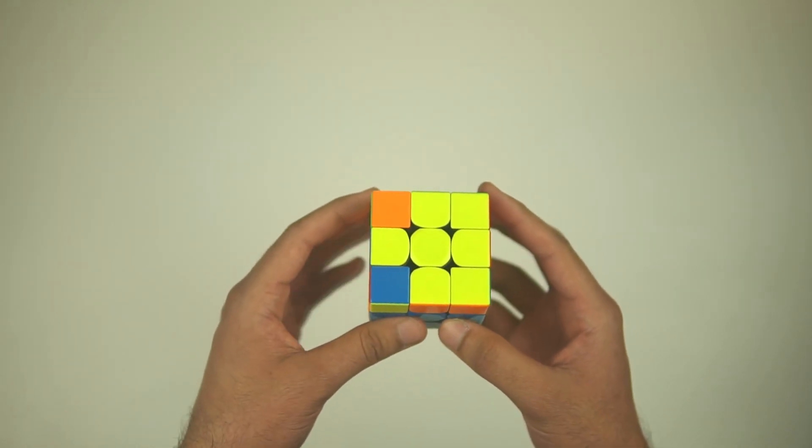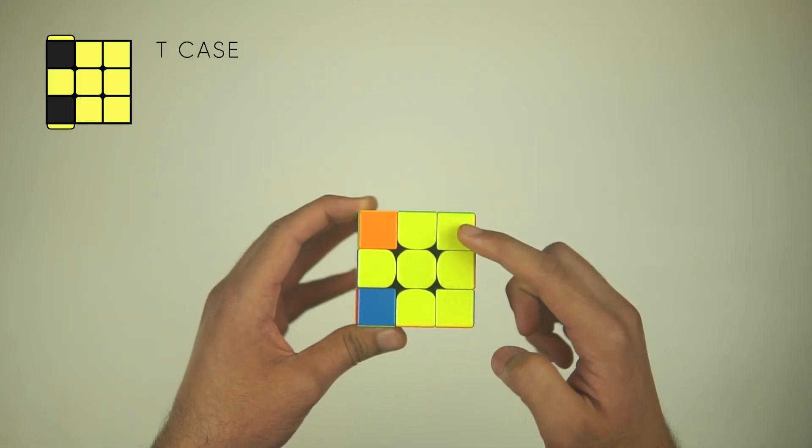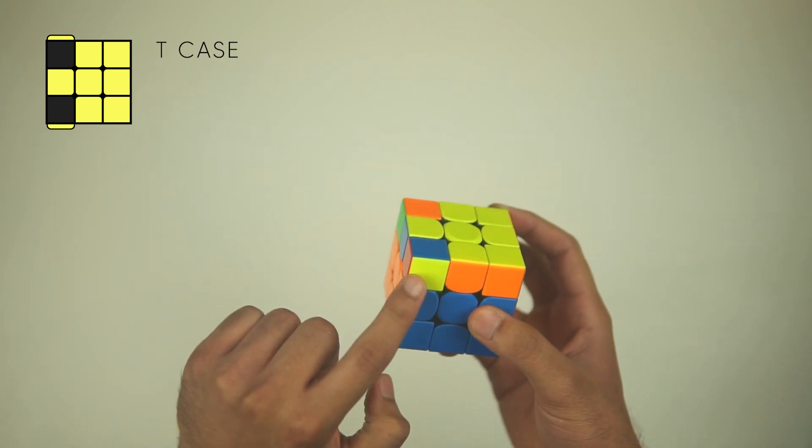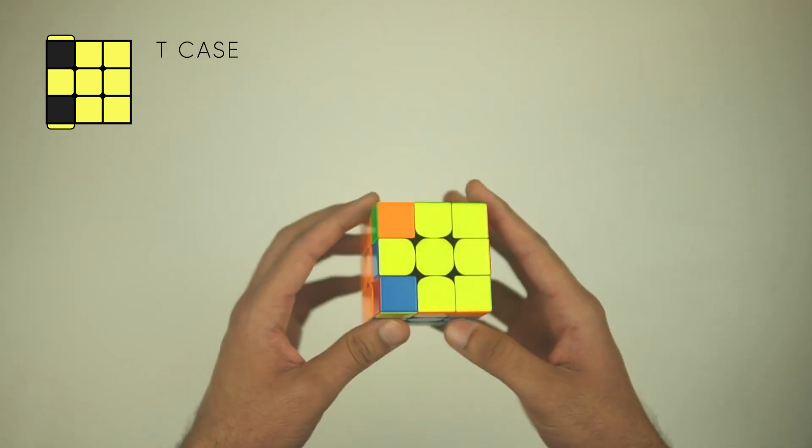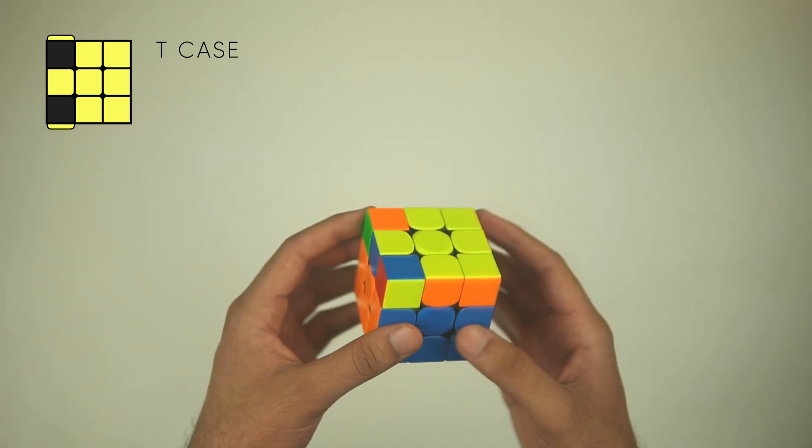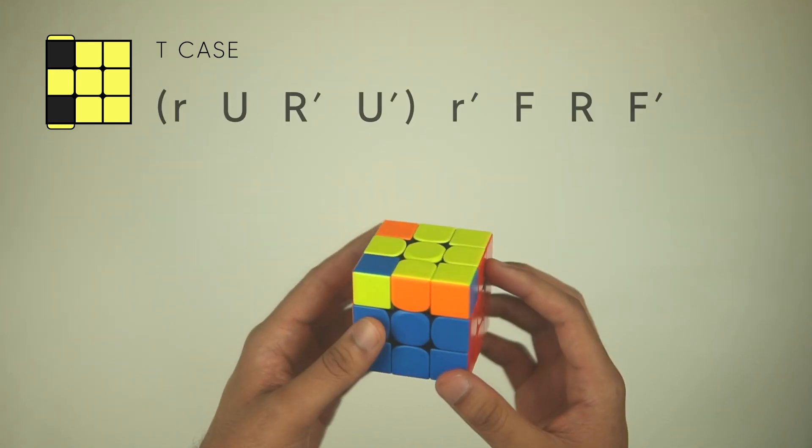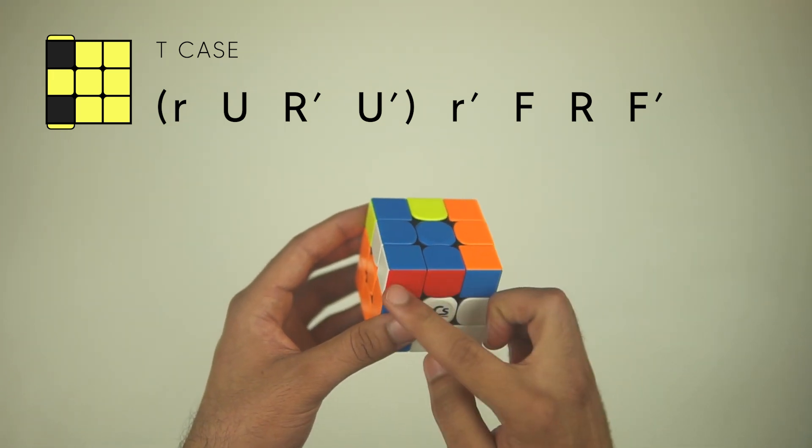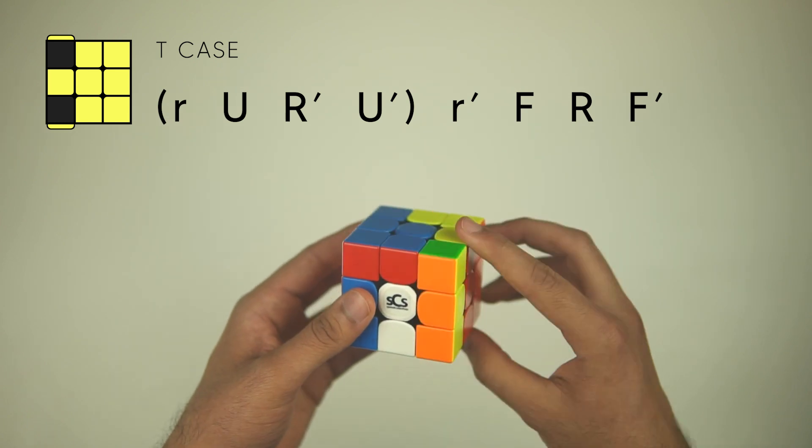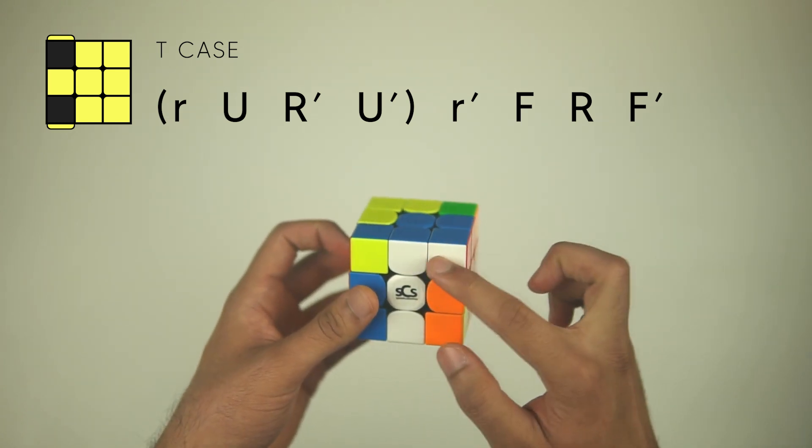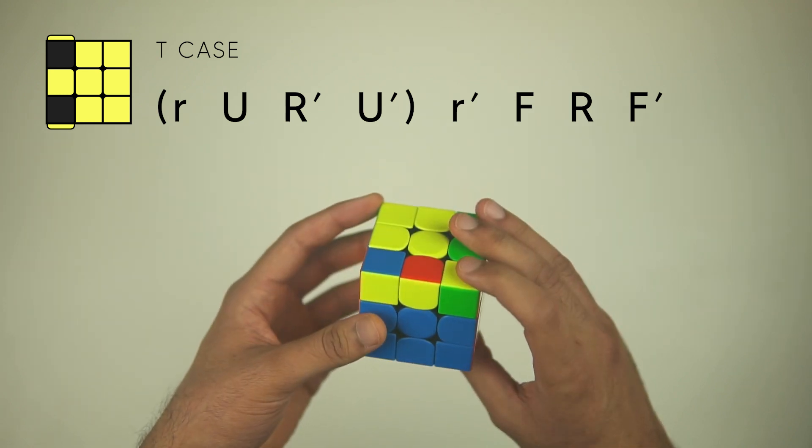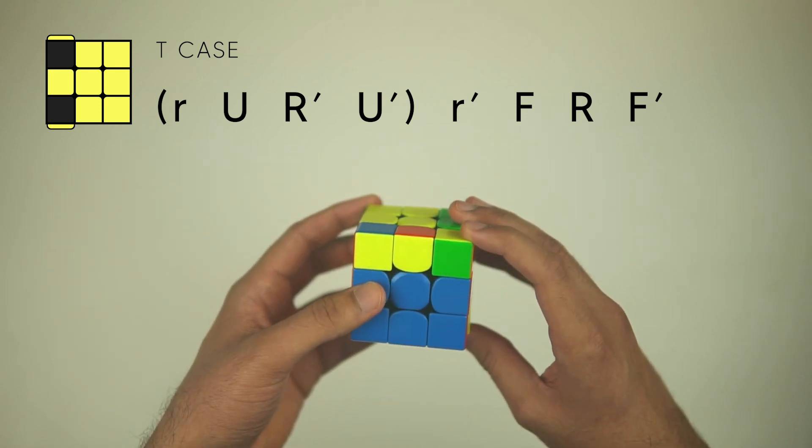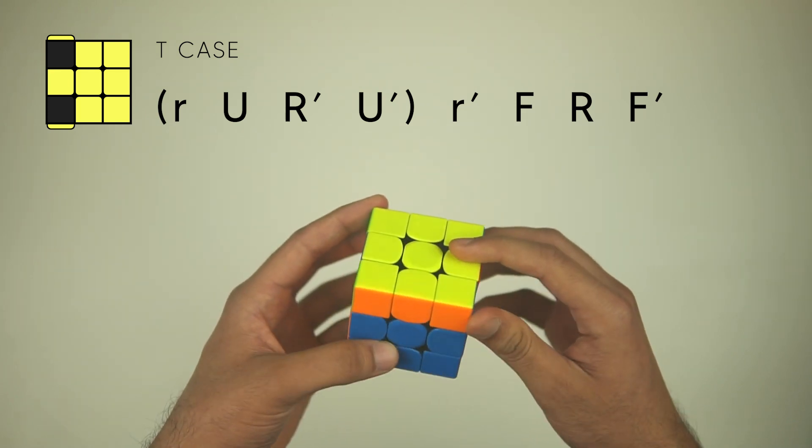Next up, we have what is called the T case, where you have these two yellow corners solved on the same side. And on the left, you're going to see this yellow corner here and a yellow corner here on opposite ends. And just hold it like this. And this is actually the inverse of the L case. We're going to do a lowercase R first, do a U to move this out of the way, R', U', and we're going to insert this in with a lowercase R, and then we have to fix everything up and bring this back. So, do a F, R, F'.